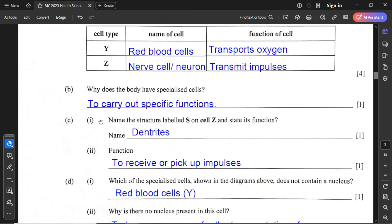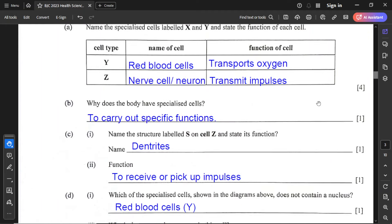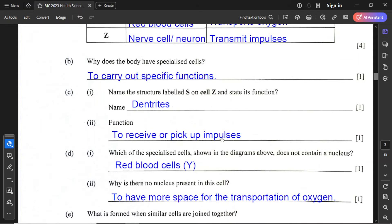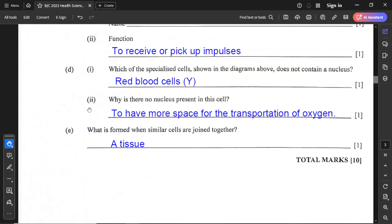For part C1, name the structure labeled S on cell Z and state its function. If we go back to cell Z, the structure S is the dendrites. The function of dendrites is to receive or pick up impulses. Dendrites always receive the impulse. For part D, which specialized cell shown in the diagrams above does not contain a nucleus? That is the red blood cells or cell Y.